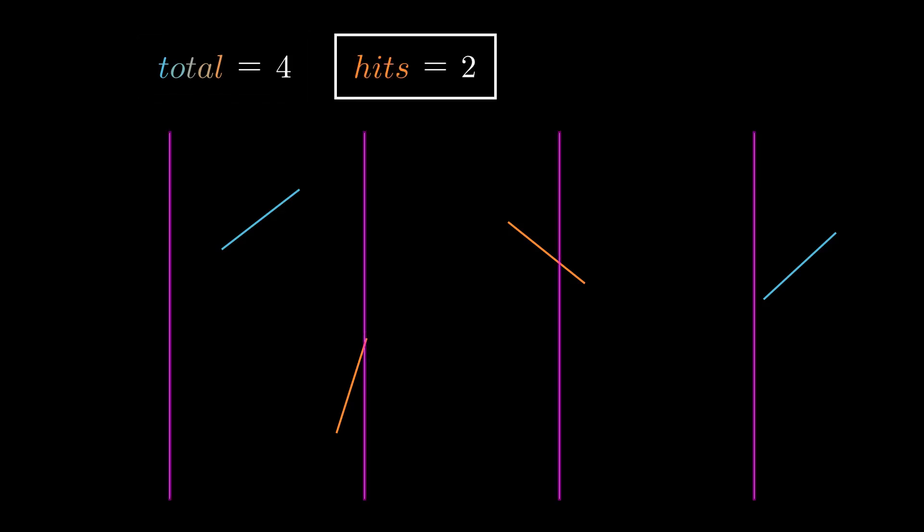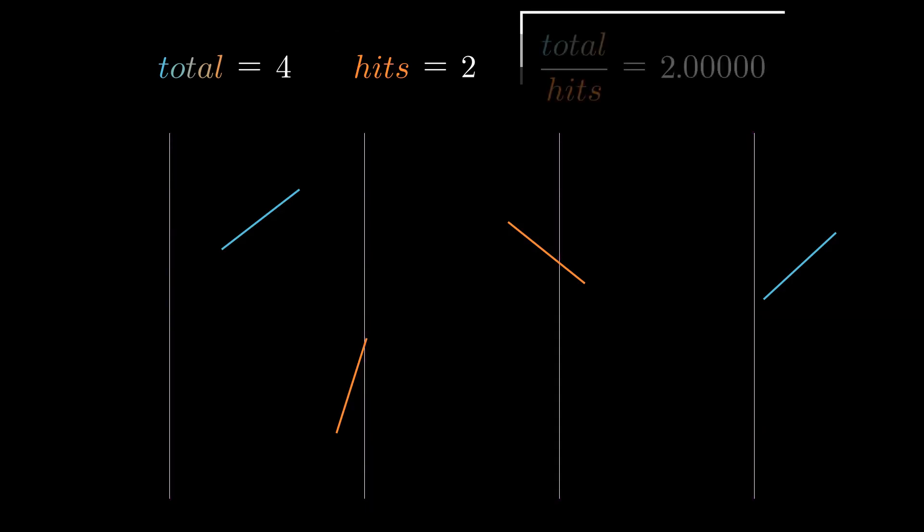Start with a floor with parallel lines that are equally spaced out. Let's randomly throw some needles onto this floor. We will keep count of the total number of needles thrown and the number of needles that cross one of these lines. We will also keep track of the total number of needles divided by the total number of hits, or 1 divided by the probability of a needle crossing a line.